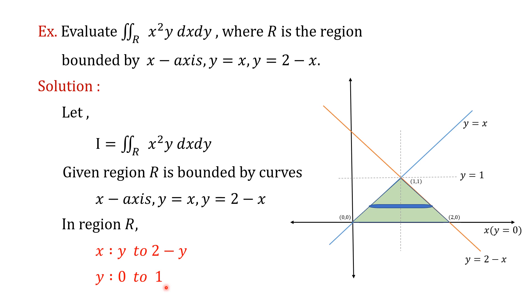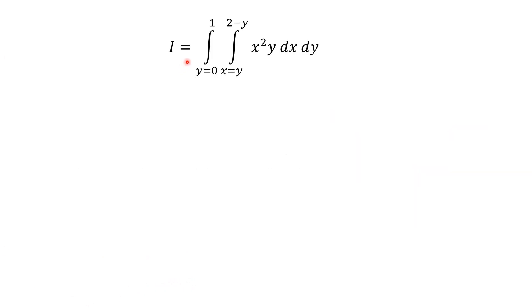Now we will evaluate the integral. I equals the integral from y equal to 0 to 1, of the integral from x equal to y to 2 minus y, of x squared y dx dy. Since we have considered the horizontal strip, we integrate first with respect to x. For the innermost integral, limits are x equal to y to 2 minus y; for the outermost integral, limits are y equal to 0 to 1. As we integrate with respect to x, y is treated as constant and taken outside.